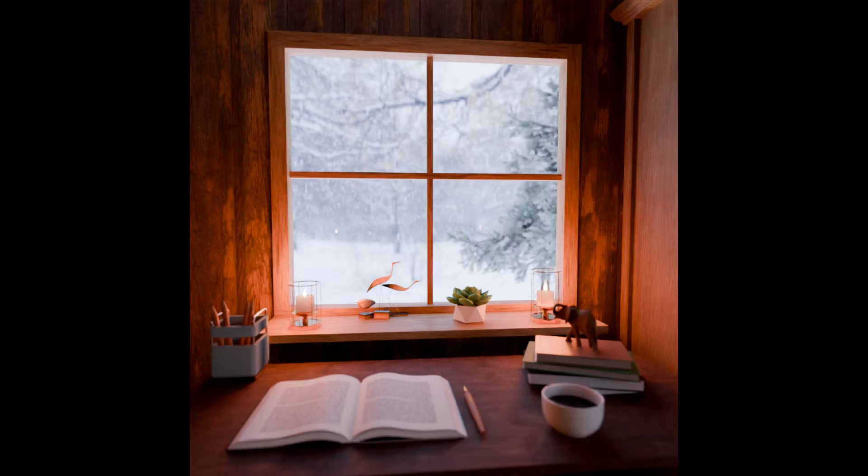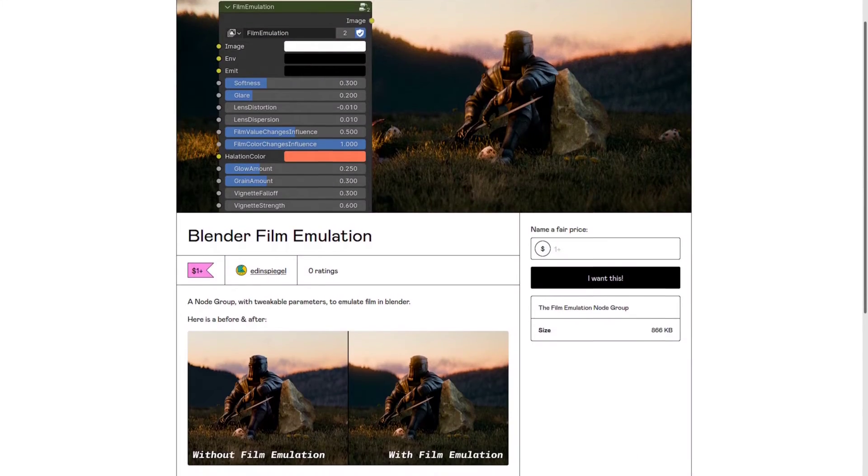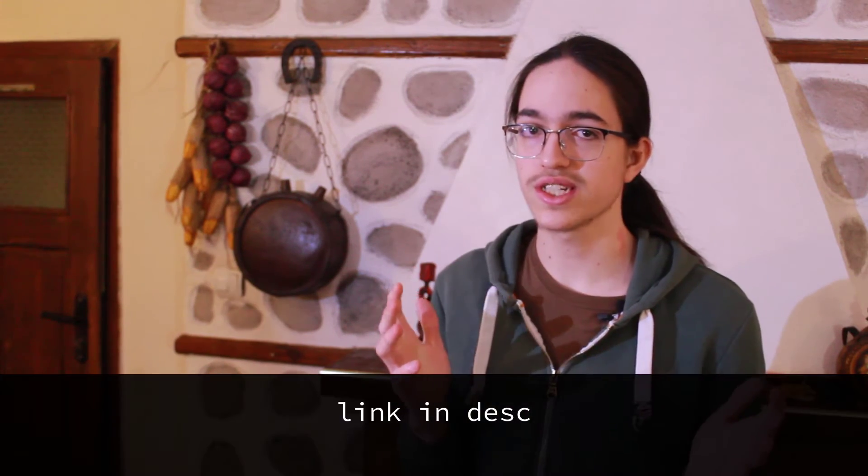if you want your renders to go from this to this, this to this, or this to this, then check out my procedural film emulation node group for the Blender Compositor. It's available for just $1 on my Gumroad, and I personally use it on every render I do. So if that sounds interesting, check it out.